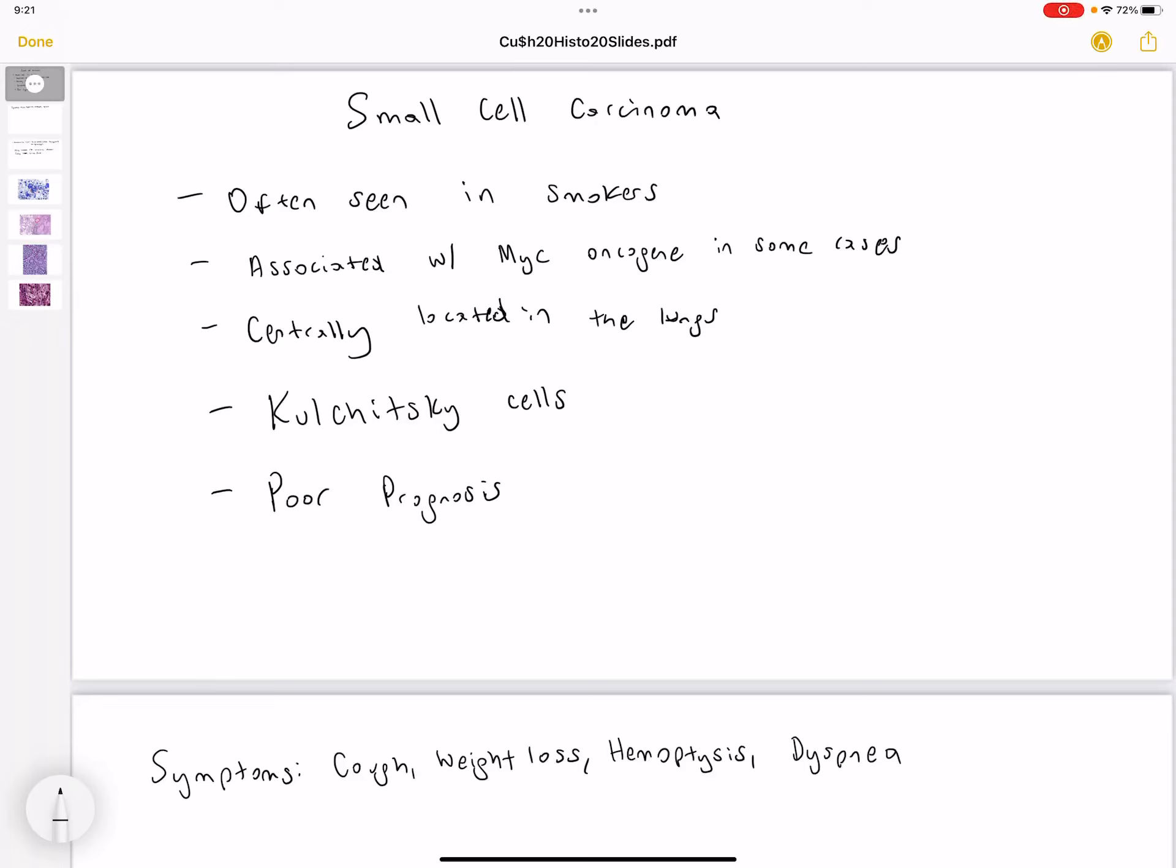Hello everyone, in this video we're going to be discussing small cell carcinoma. Small cell carcinoma is a cancer that is often seen in smokers. It is associated with myoncogene in some cases and is centrally located in the lungs.